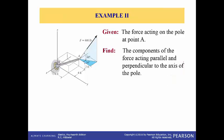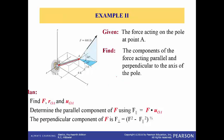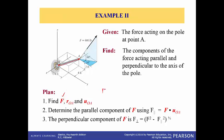I'm going to review these concepts based on a second example — we discussed the first example in class. The given is that there is a force acting on the pole at point A, and we need to find the components of the force acting parallel and perpendicular to the axis of the pole, specifically along axis OA. We need to figure out the force vector F and the position vector from O to A, then determine the parallel and perpendicular components.